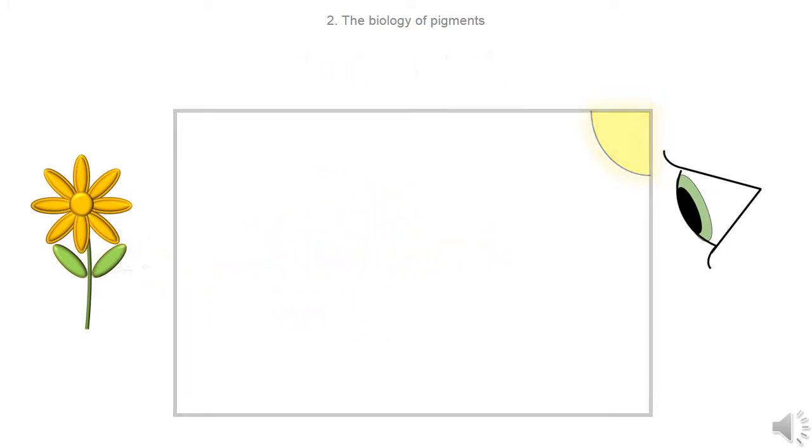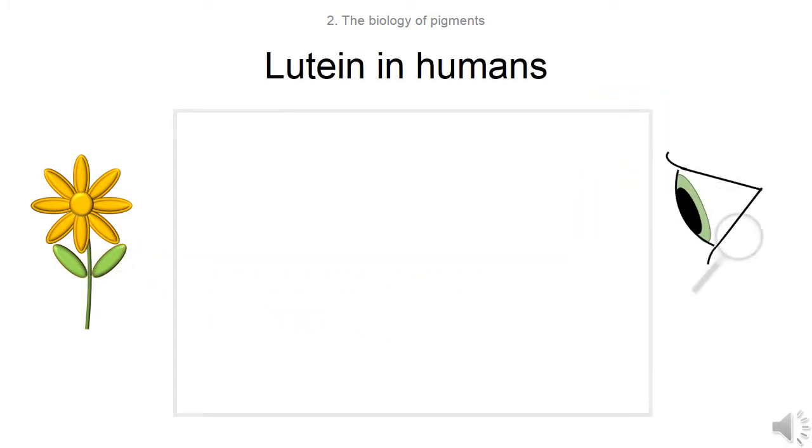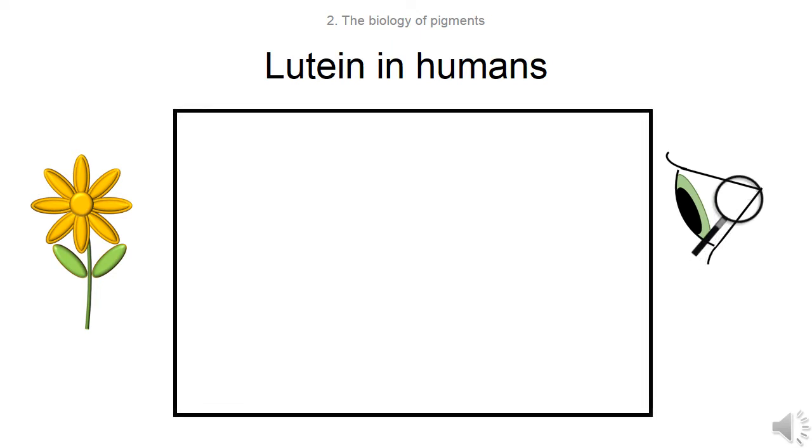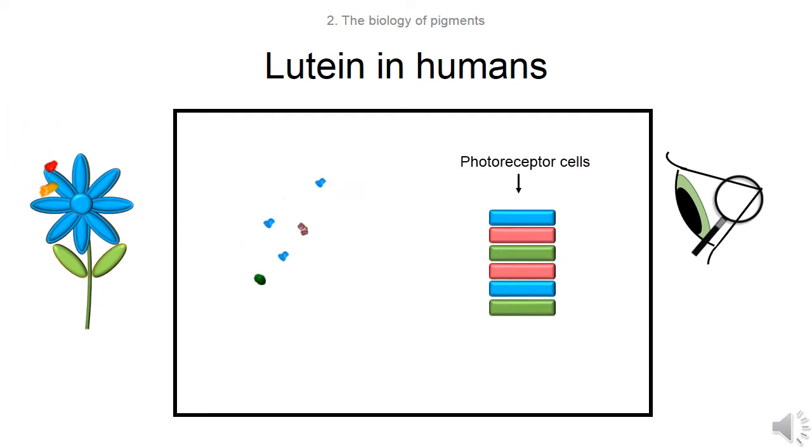Lutein is also found in humans. Lutein is found at high concentrations in the macula, a dense spot of photoreceptor cells at the back of the eye. Like plant cells, photoreceptor cells can be damaged by high energy blue light. Lutein acts like a filter, stopping blue light reaching the photoreceptor cells.